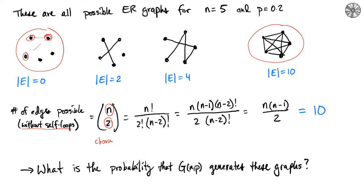Writing out n-choose-2: the numerator is n times (n-1) times (n-2) factorial, divided by 2 times (n-2) factorial, which simplifies to n(n-1)/2. This is the same formula used when discussing average degree. For n=5, that's 5×4/2 = 10. Counting up all possible edges in the graph: one, two, three, four, five, six, seven, eight, nine, ten — indeed ten possible edges.